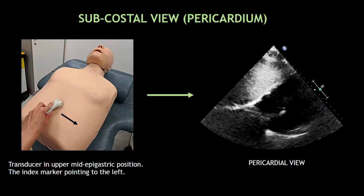First, I'm going to show you how to obtain this subcostal view. Here we usually visualize a four-chamber view of the heart. However, in this view we normally pay close attention to the pericardium. To obtain this view, we just have to place the probe in the upper mid-epigastric position, with the index marker pointing to the left.